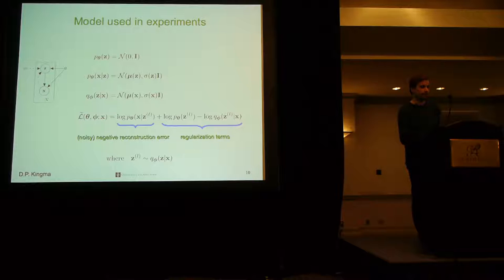The model we use in experiments is as follows. We have a prior of the latent variables, which is simply a standard normal distribution. Then we have the likelihood function, p of X given Z, which is also a normal distribution, but whose mean and variance are nonlinear functions of Z. In our experiments, for this we use a fully connected neural net. And then for our approximate posterior, we use also a normal distribution whose mean and variance are nonlinear functions of X, also using a fully connected neural net.